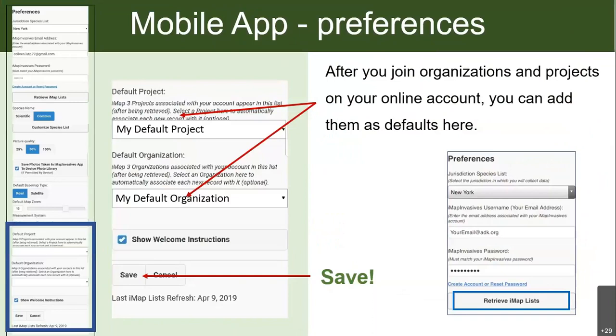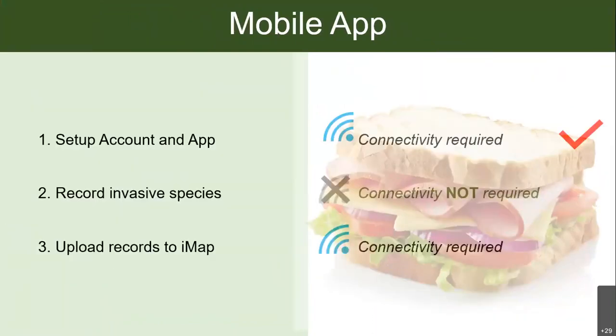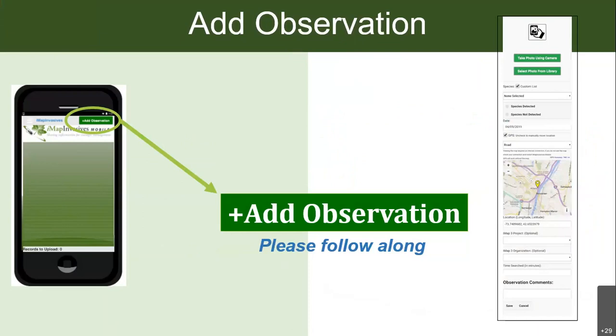You need to do all those account preferences while you're connected to WiFi or mobile data. Once you're out in the field, you can record invasive species without being connected to data — you can just go on your way.